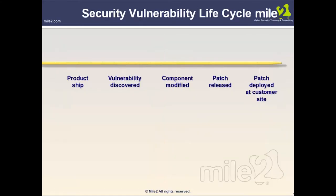Looking at the security vulnerability life cycle: once a product ships, vulnerabilities get discovered — generally by users of the product. Continual development also exposes vulnerabilities that the vendor can address. Once found and discovered, the components are modified, a patch is released, and then the patch is deployed at the customer site.